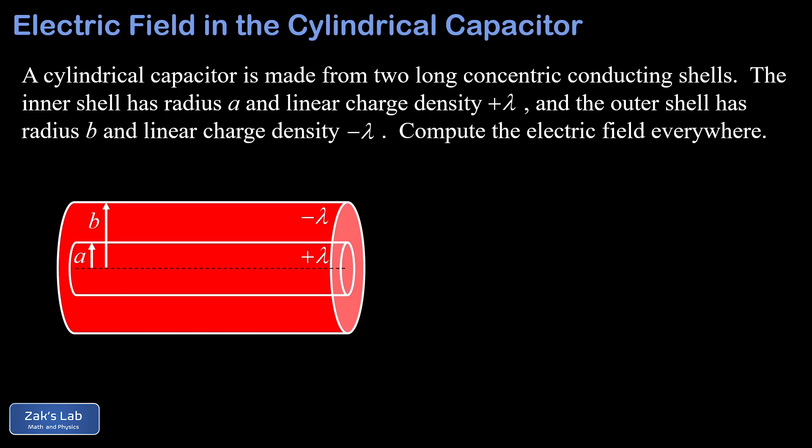In the problem we're told we have a cylindrical capacitor made from two long concentric conducting shells. The inner shell has radius a and linear charge density plus lambda. Remember that the units of linear charge density are coulombs per meter. The outer shell has radius b and linear charge density negative lambda.